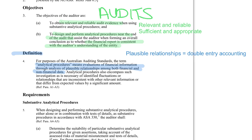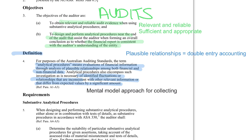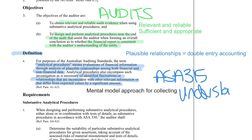When doing our analytical procedures, we're looking at identifying fluctuations or information that is inconsistent with other information we might get from the firm. This is the mental model approach for collecting evidence. The analytical procedure section tells us we're looking for things that don't make sense — inconsistencies. If we don't understand the client from ASA 315, we can't determine whether something is a fluctuation or not.